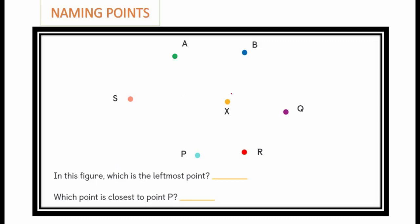In this figure, which is the leftmost point? Yes, point S. Which point is closest to point P? Yes, point R.